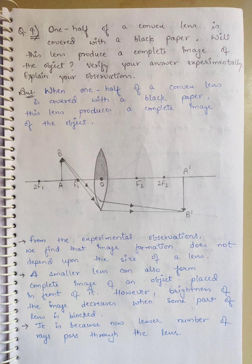Question number 9: One half of a convex lens is covered with a black paper. Will this lens produce a complete image of the object? Verify your answer experimentally. Explain your observations. We will cover it half with black paper. Will the image of the object be complete? Let's try to experiment and tell our observations.